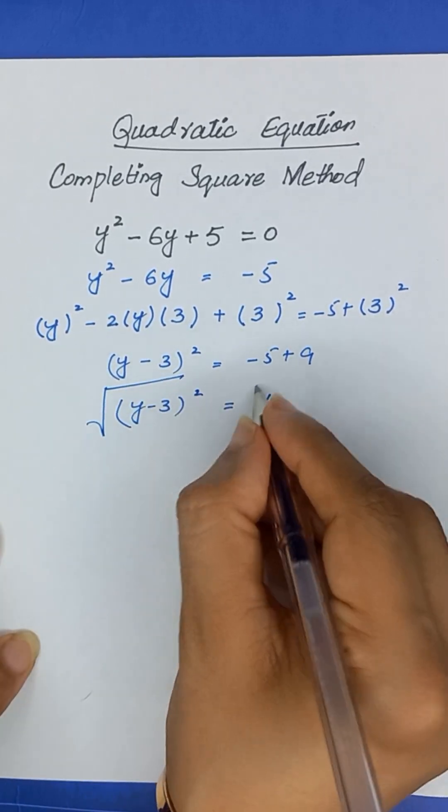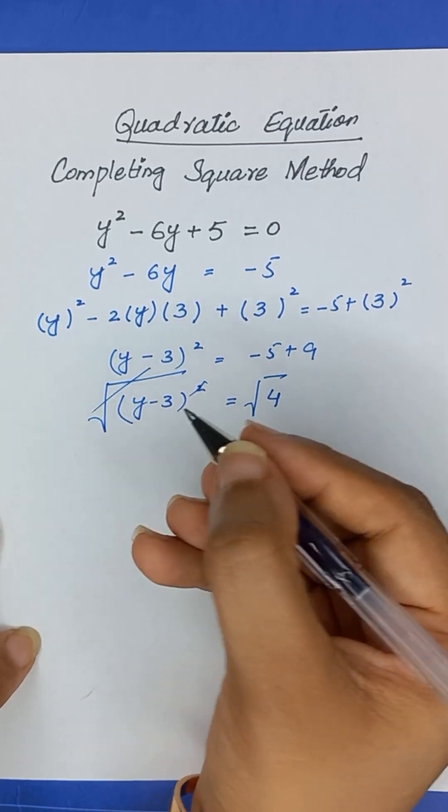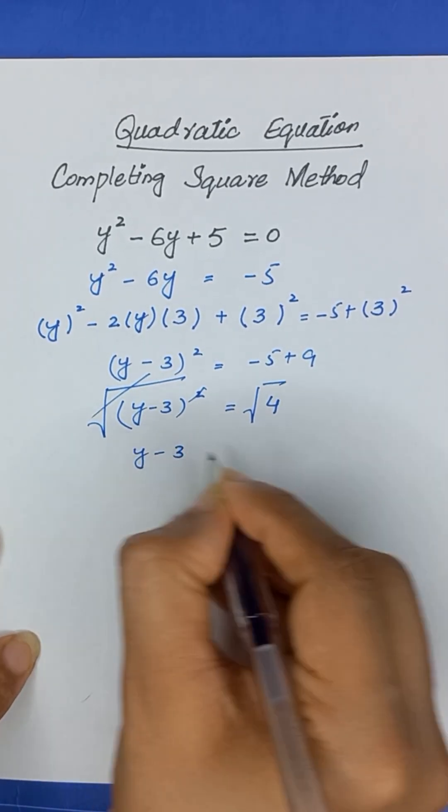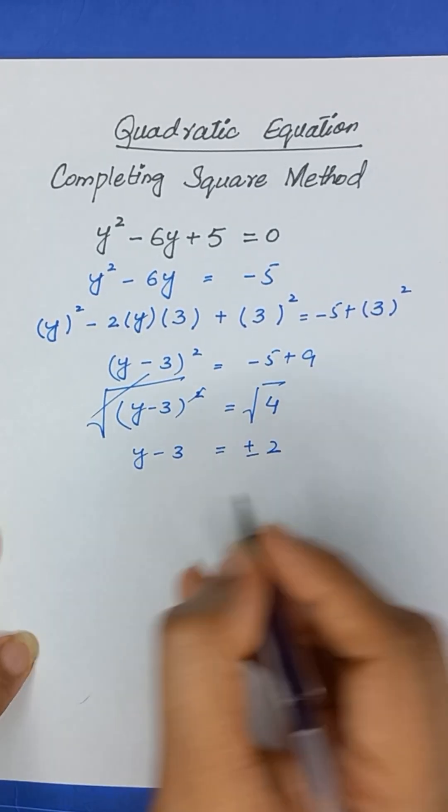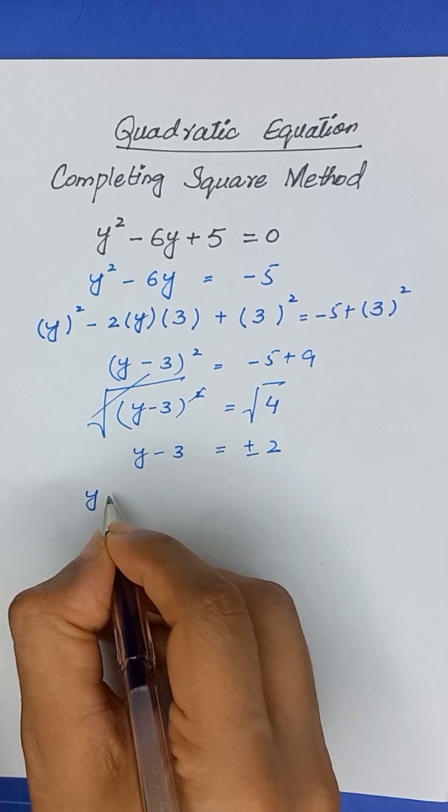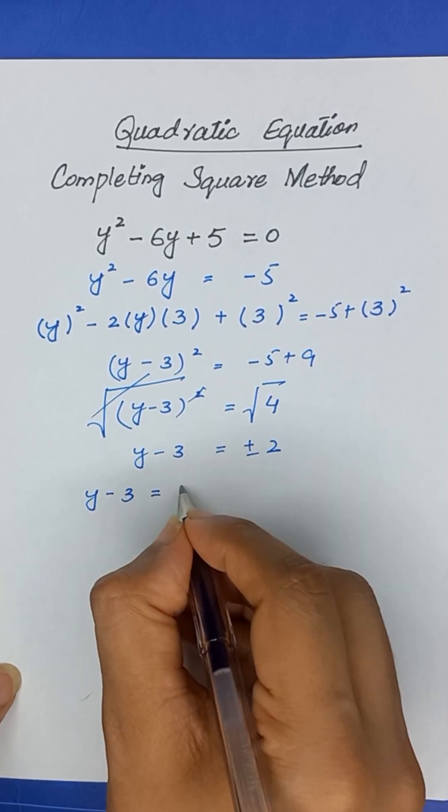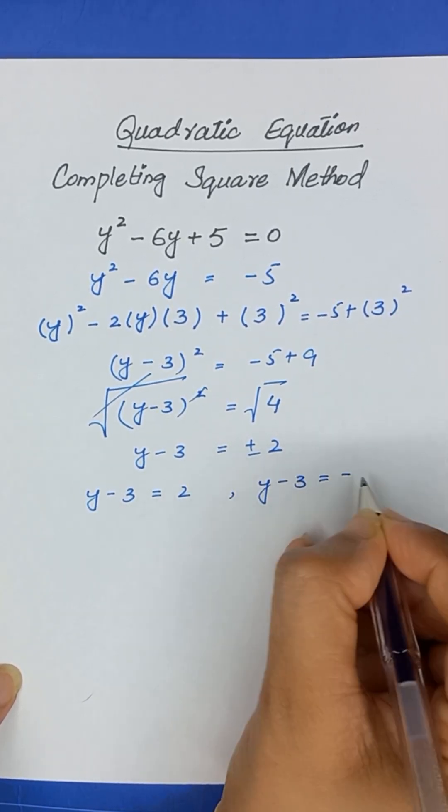To remove this square, we will apply square root on both sides. This square and square root will be cancelled out and y minus 3 will be equal to plus minus 2. So, here we have two cases that y minus 3 is equal to 2 and y minus 3 is equal to minus 2.